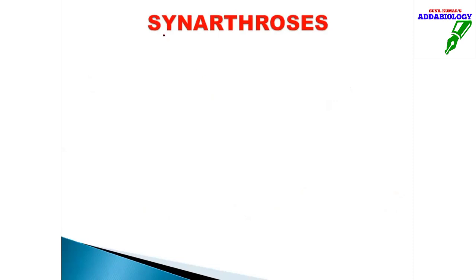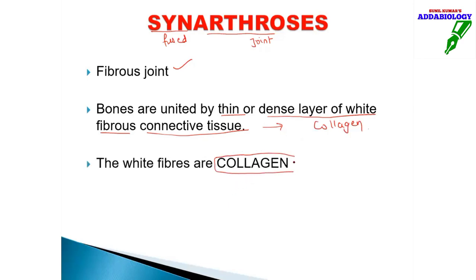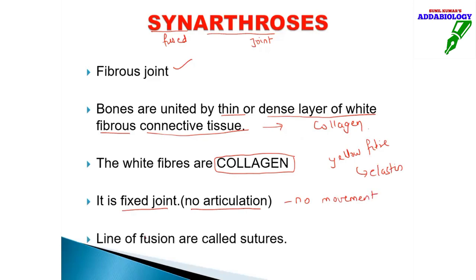The word 'syn' means fused and 'arthrosis' means joint, so synarthrosis refers to fused joints — fibrous joints where bones are united by thin or dense white fibrous connective tissue. White fibrous connective tissue is associated with collagen; white fibers are collagen. Yellow fibers, in contrast, are elastic. It is a fixed joint with no articulation or movement.